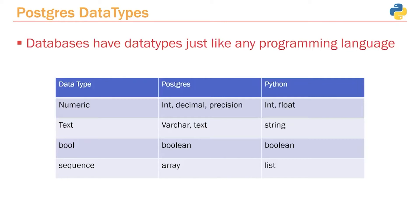Databases have data types, just like any programming language. When you create a column within a table, you need to specify what kind of data type you want to use, and that decision is ultimately based on what attribute the column represents. For example, if we're building a table for social media posts, one of the things we might have is a column for the total number of likes or retweets. For something like that, you'd want a numeric data type — one that models numbers.